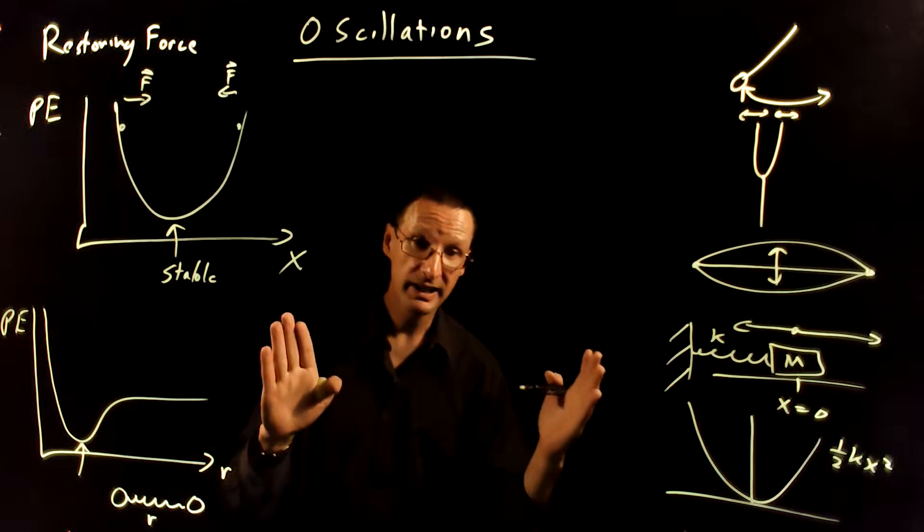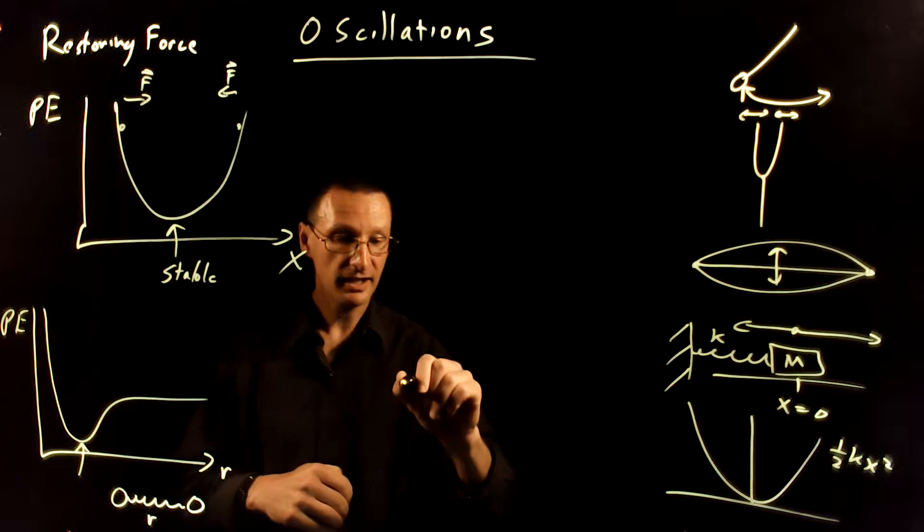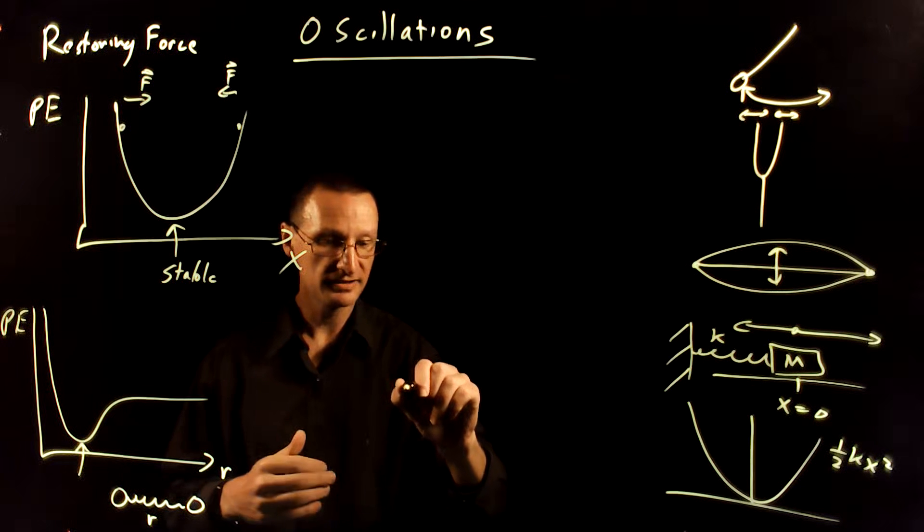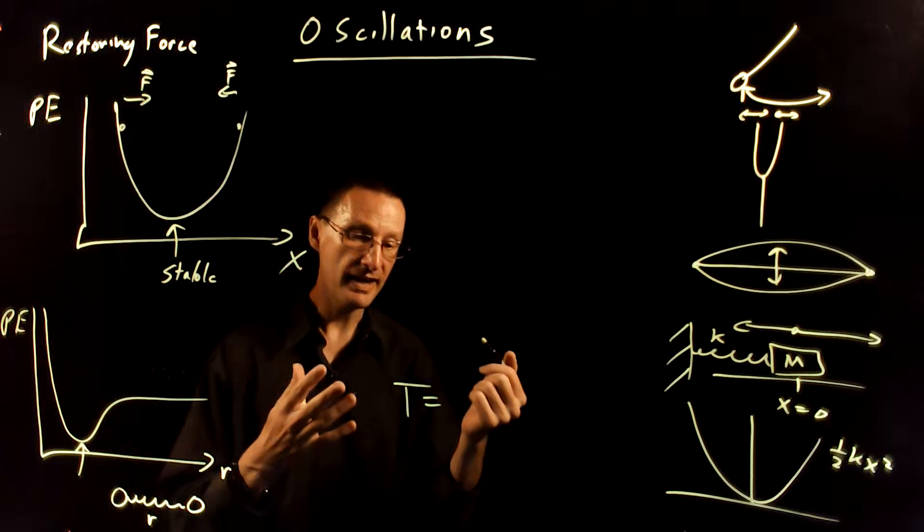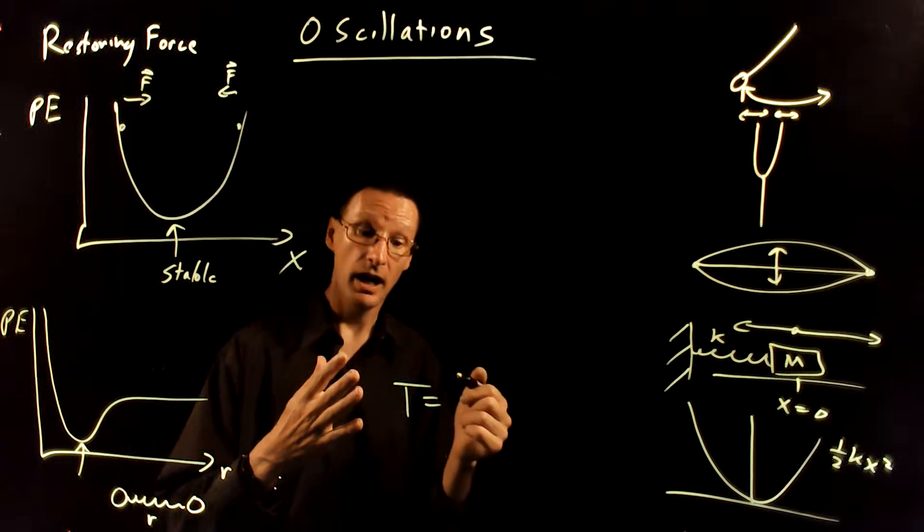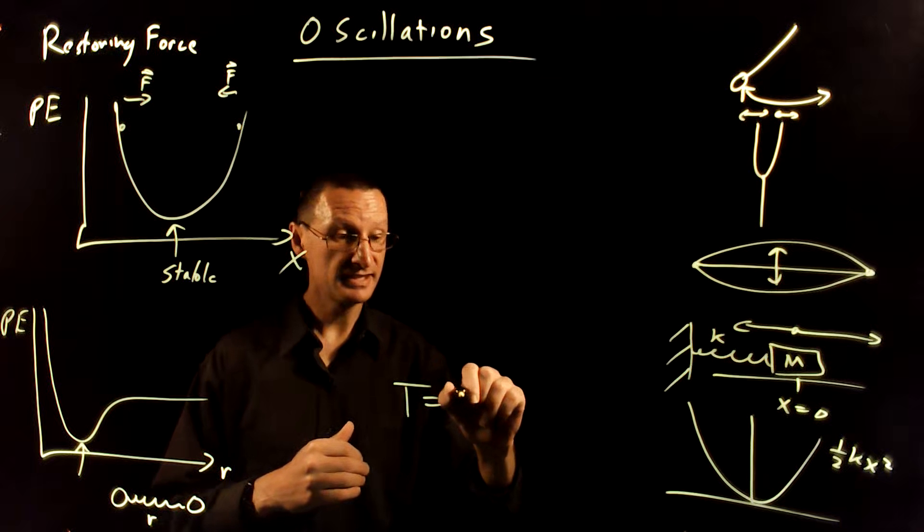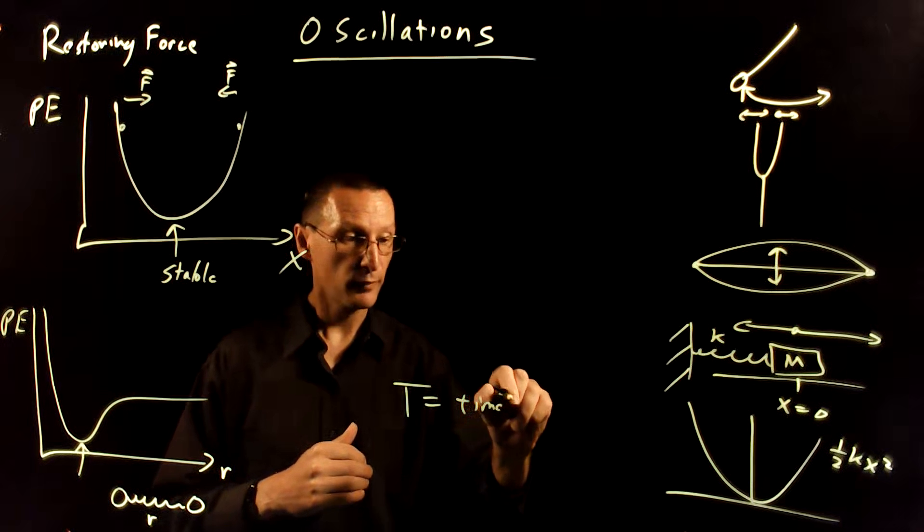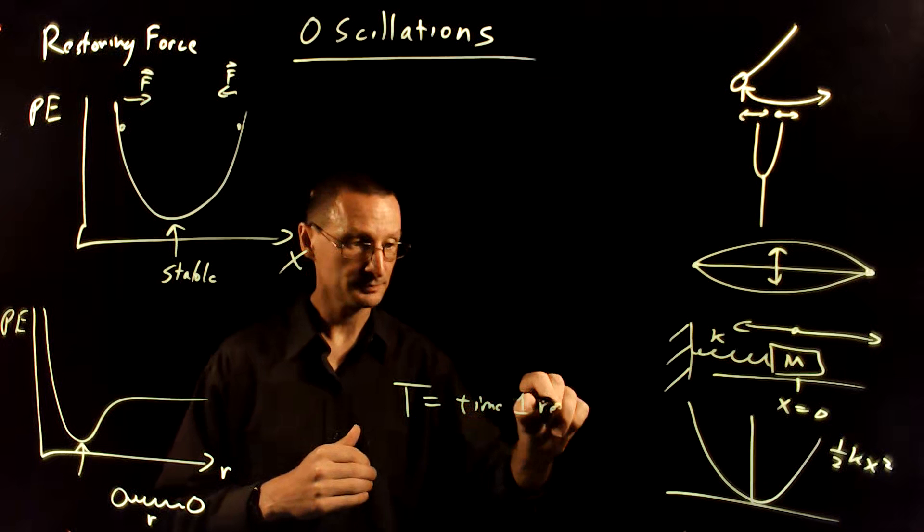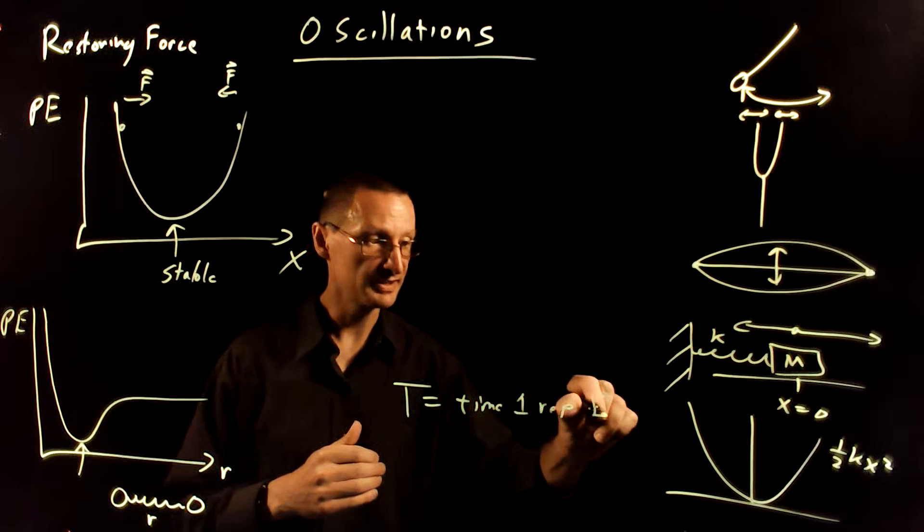And there's a couple of quick vocab words we need to talk about here with oscillations that are common to waves too. And that is the idea of the period, which we use the capital letter T to denote. And this is the time for one repetition. And this is going to be measured in seconds.